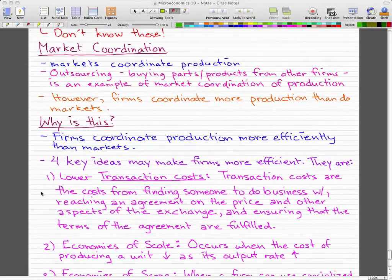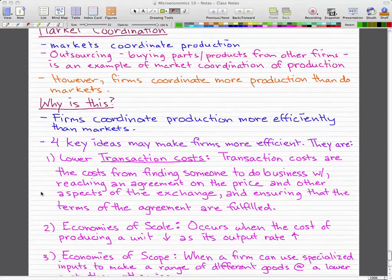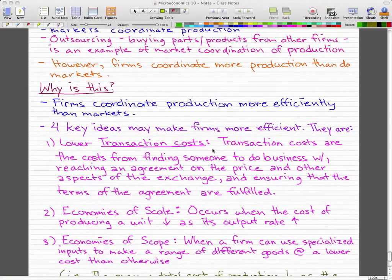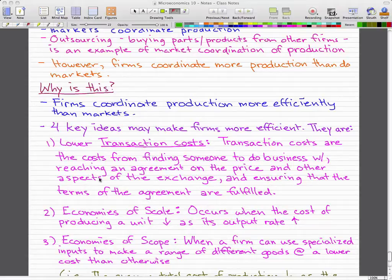But here are four key ideas that make firms more efficient. They are lower transaction costs. Transaction costs are the cost from finding someone to do business with, reaching an agreement on the price and other aspects of the exchange, and ensuring that the terms of the agreements are filled.